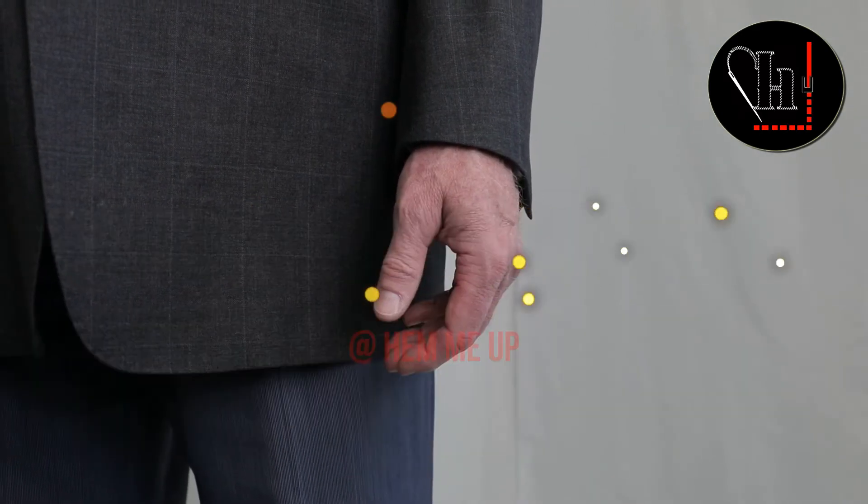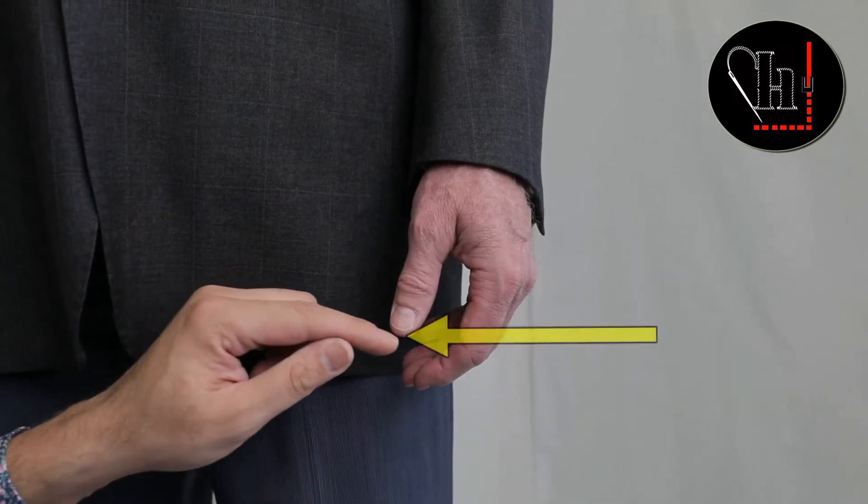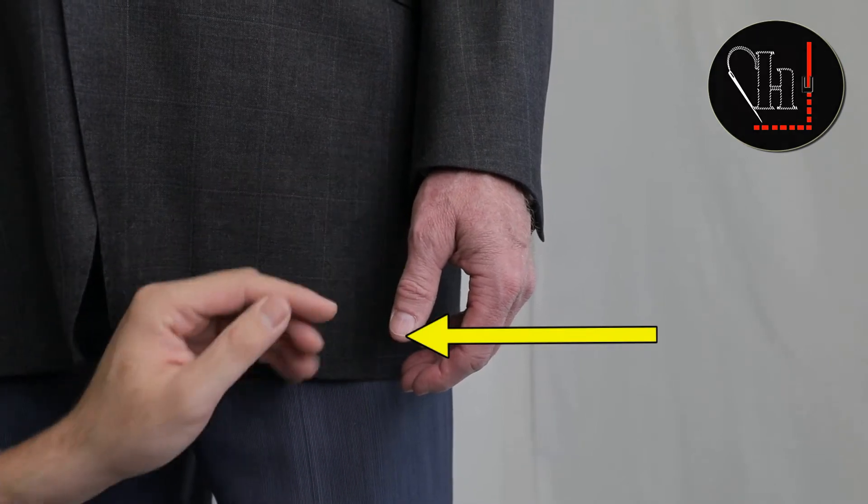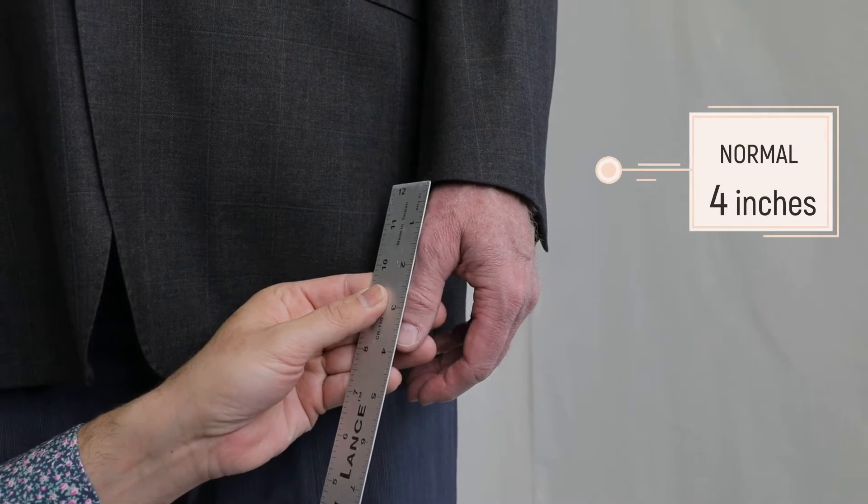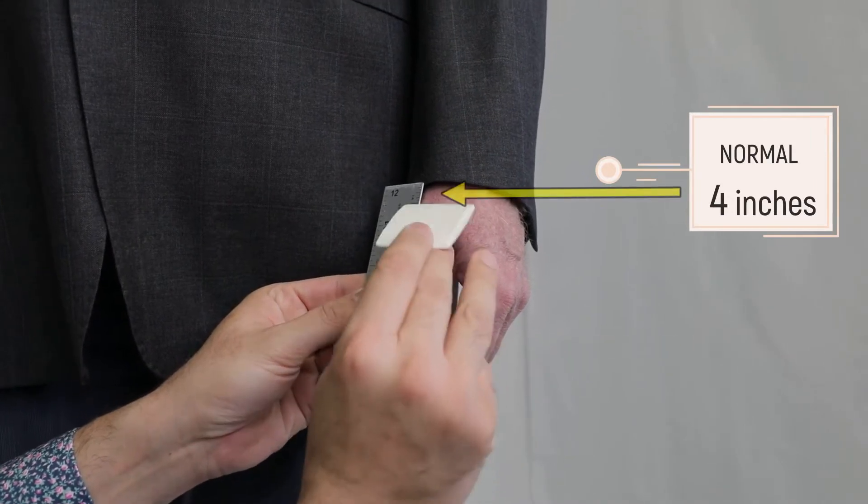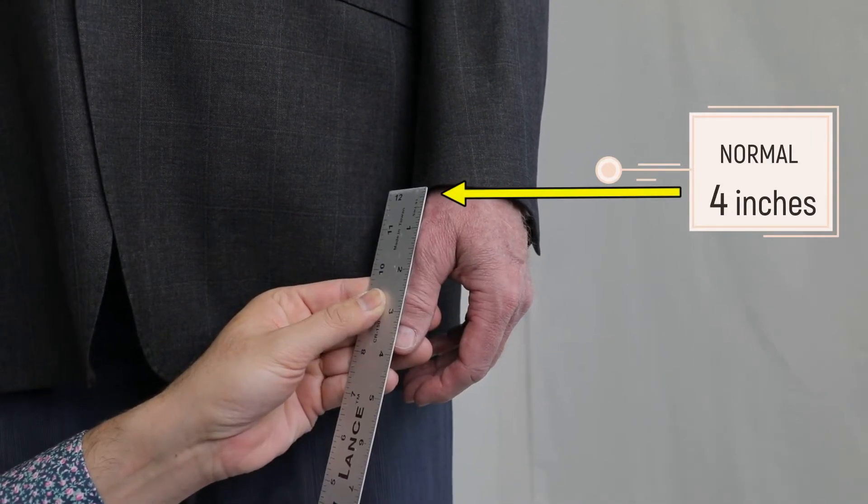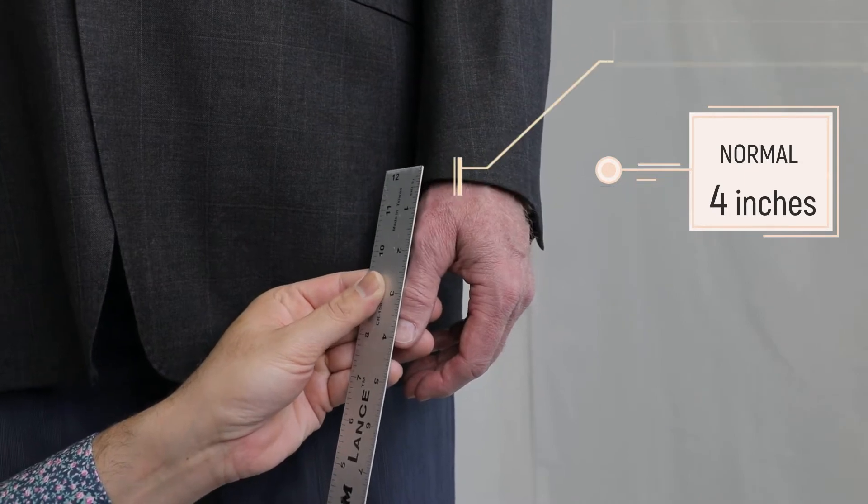Jacket sleeve measurement - what we do is measure from the thumb up. If you have a ruler, four inches from the thumb up is for normal jackets and normal sleeve measurements.